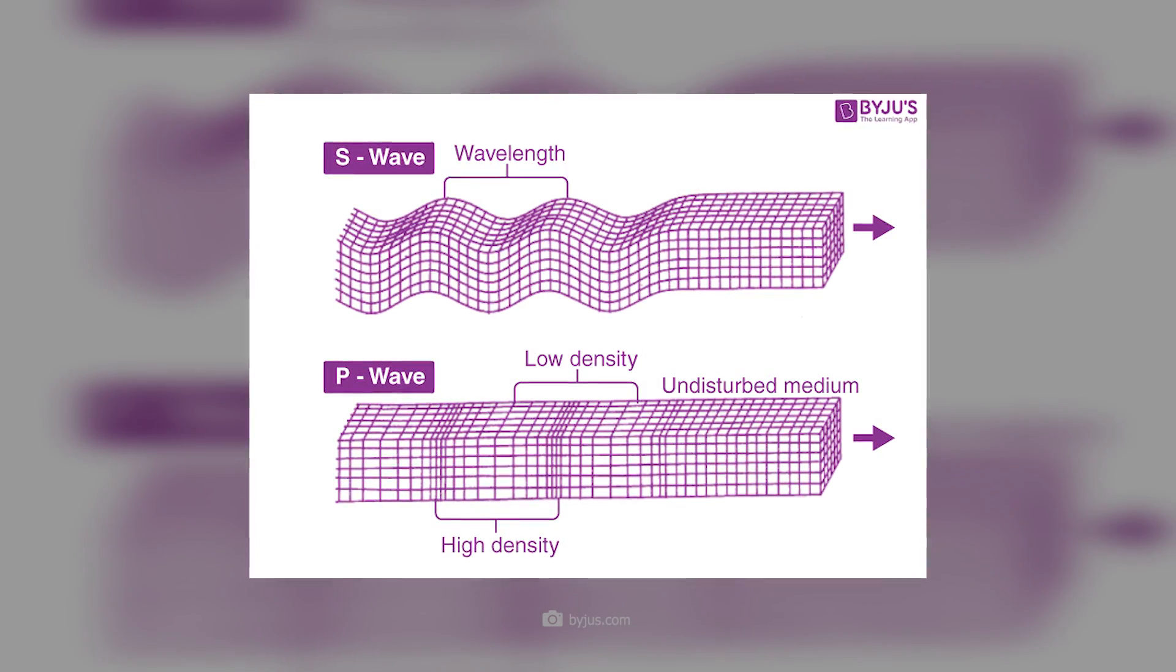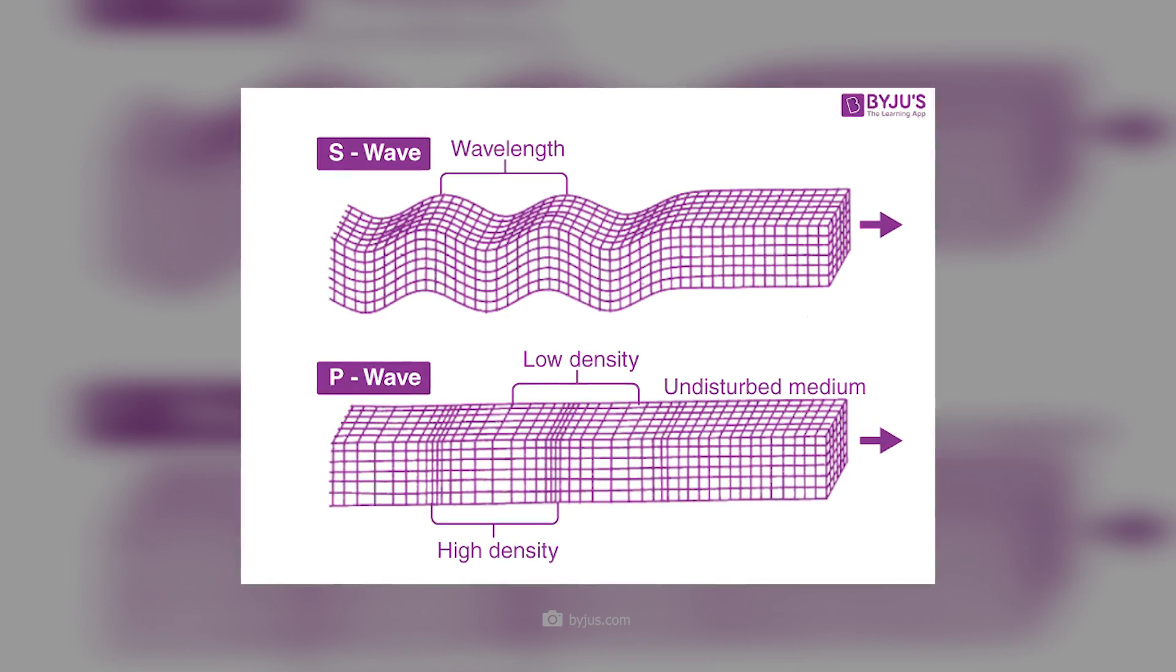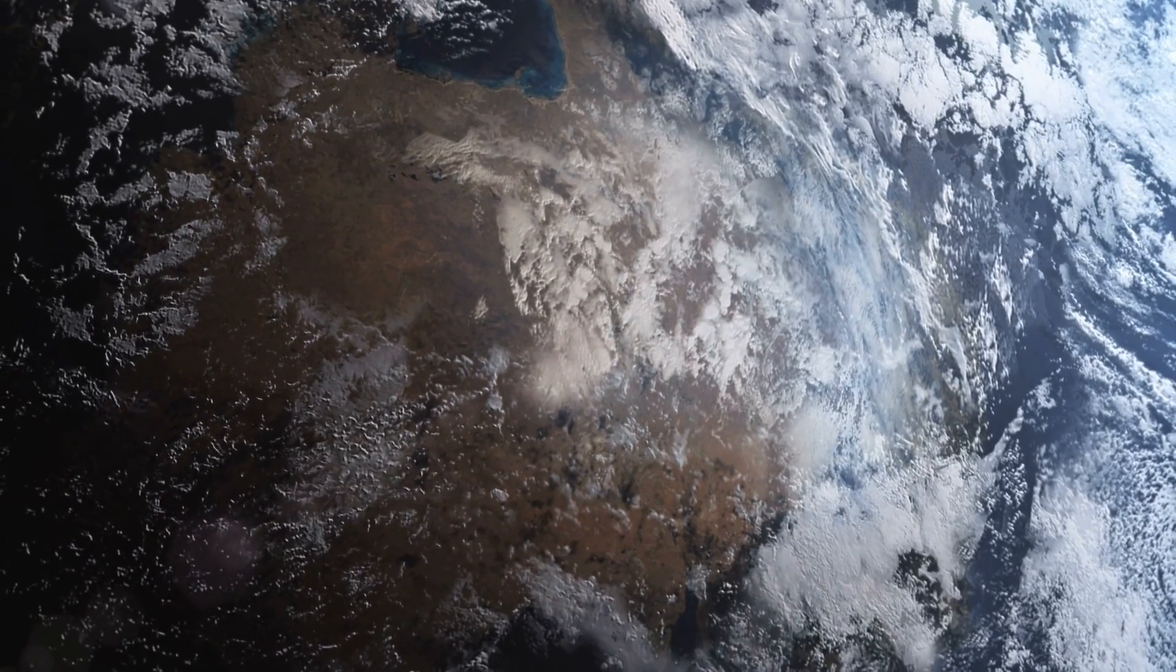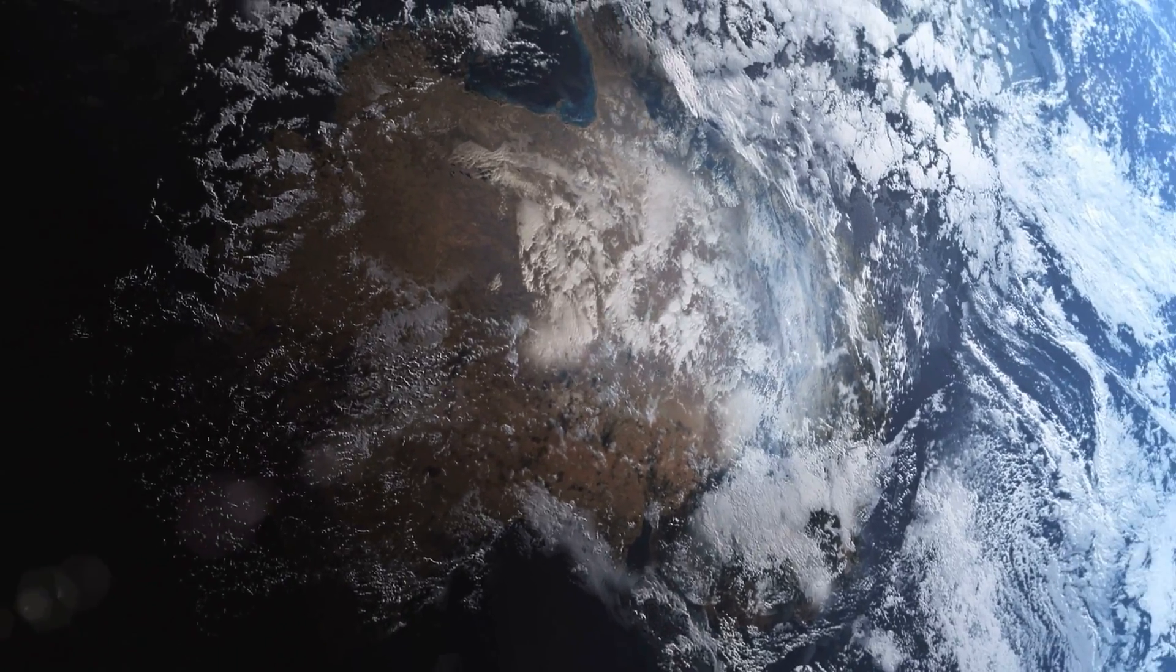Seismic waves occur mainly as P and S waves. P waves, or primary waves, are pressure waves that cause rocks to vibrate parallel to the direction of wave propagation. Because they are the fastest seismic waves, they are the first to arrive from the epicenter of the earthquake.